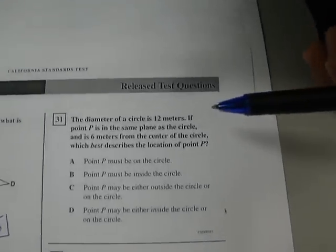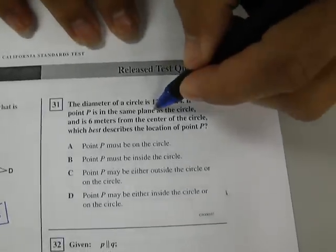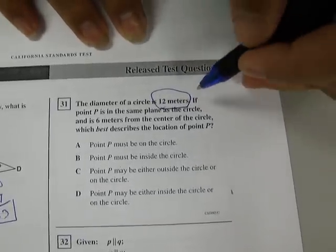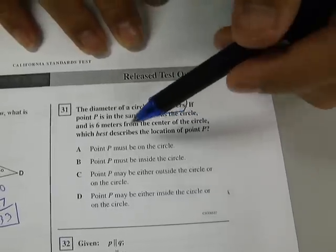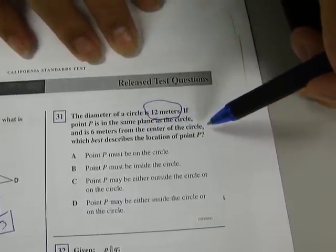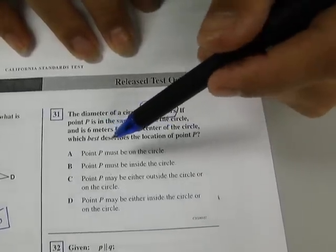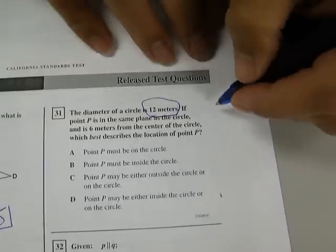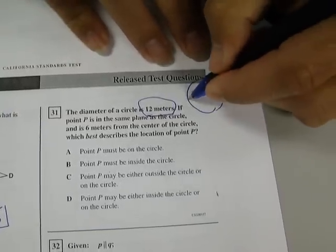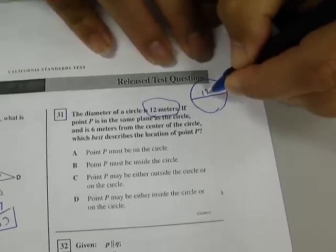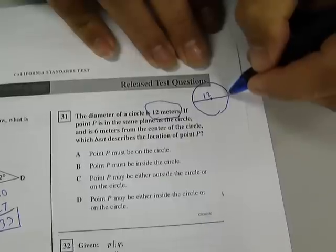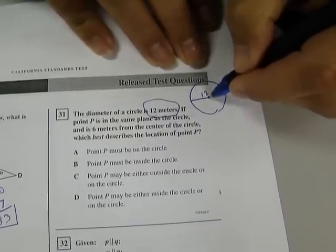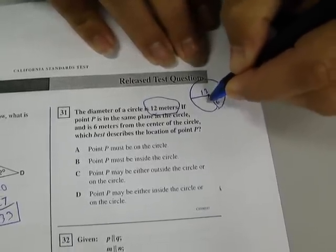Number 31. The diameter of a circle is 12 meters. If point P is in the same plane as the circle and six meters from the center of the circle, which best describes the location of P? So I like to always draw it. So it says the diameter is 12 and that P is six from the center. Well, if the diameter is 12, then the radius is six, right?